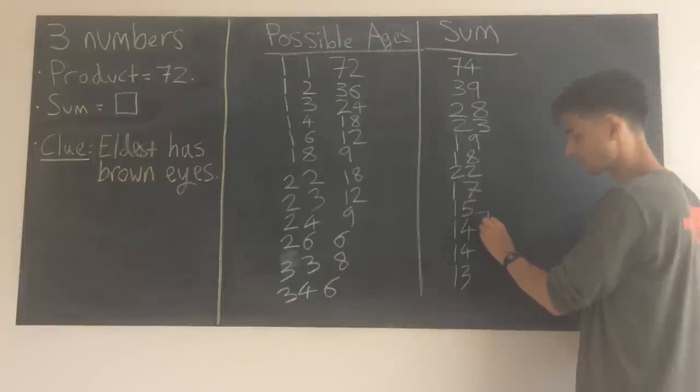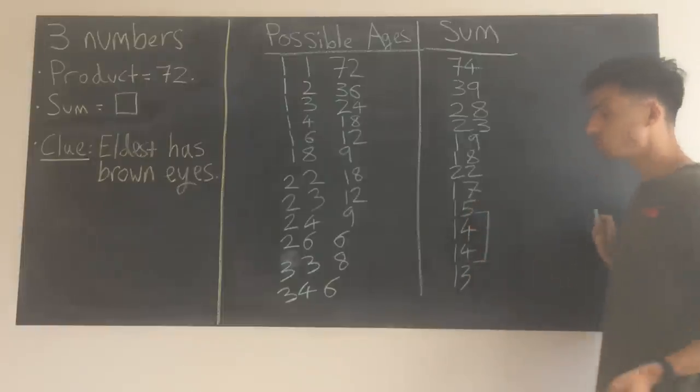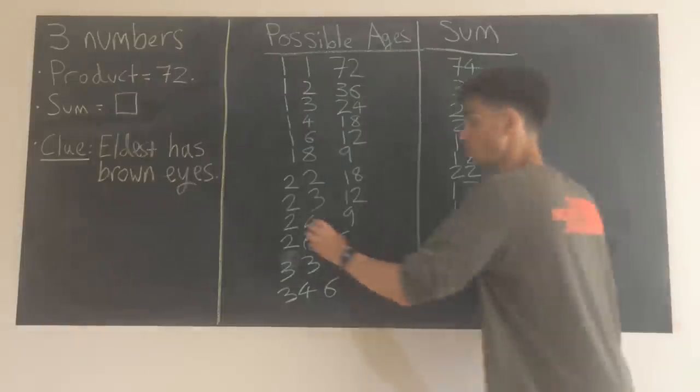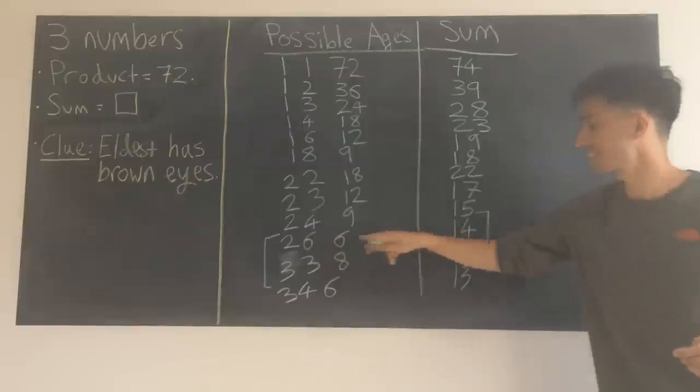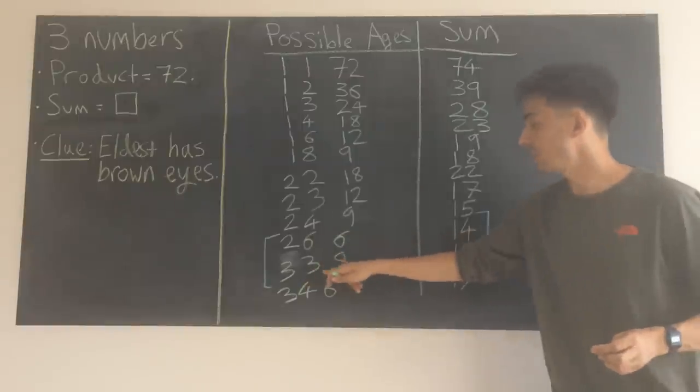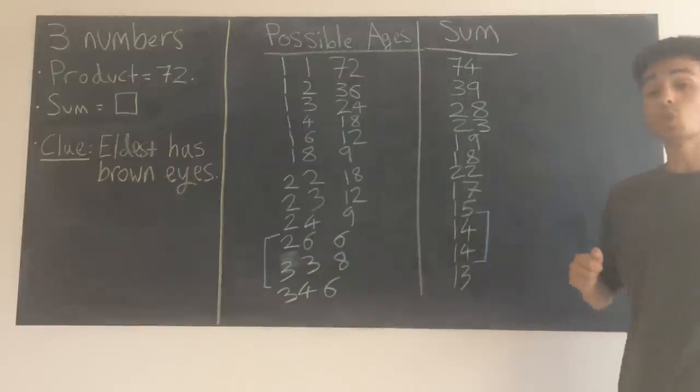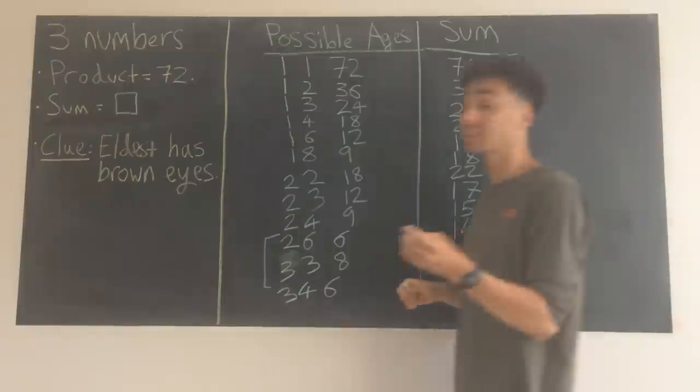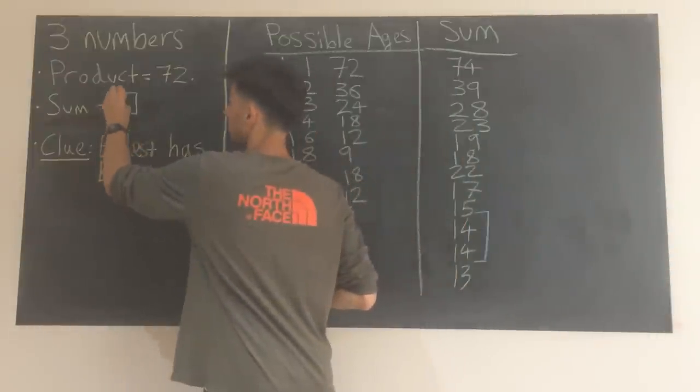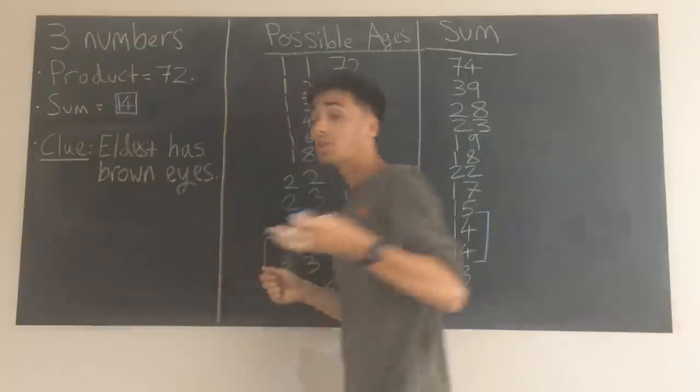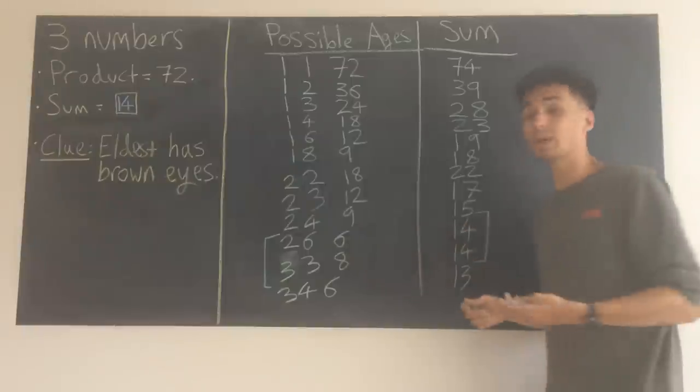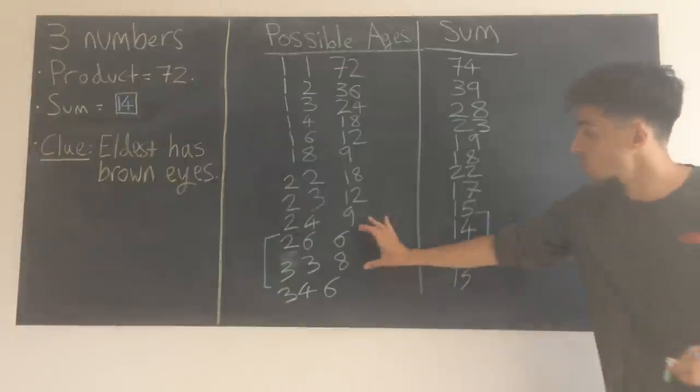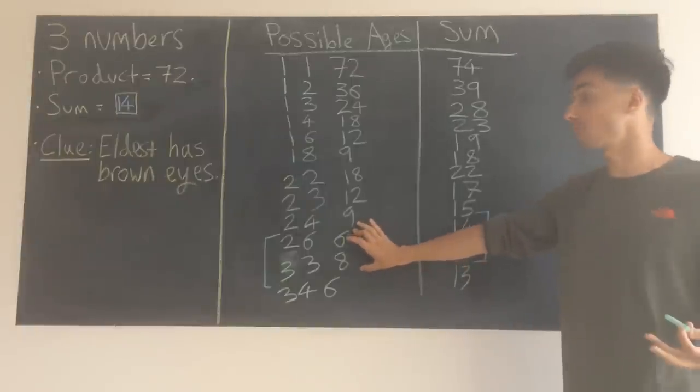Because if you have a look, for 14, there are two possible combinations. We could either have 2, 6 and 6, or 3, 3 and 8. So one thing we know is the sum must have been 14. That must be the house number, because the mathematician couldn't decide. It was impossible to answer the question based on just that information.